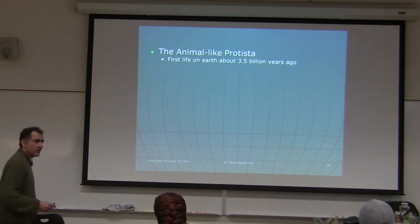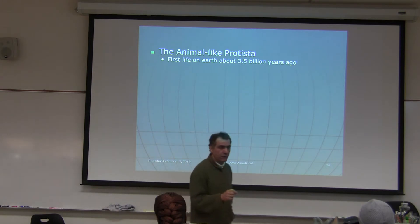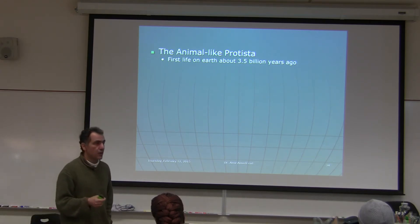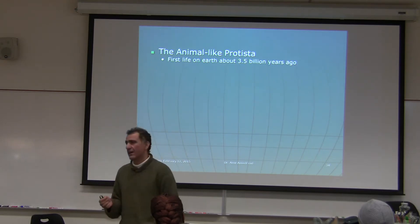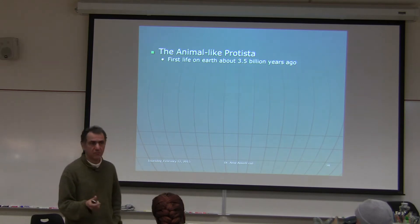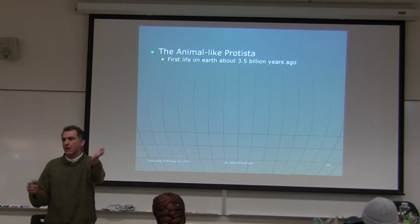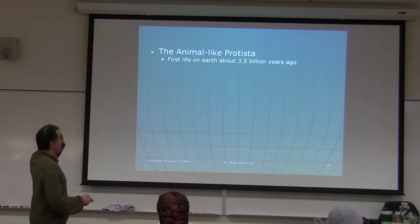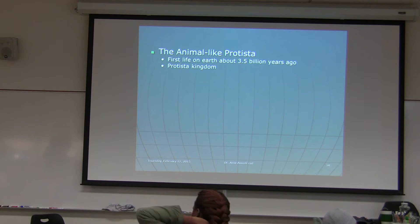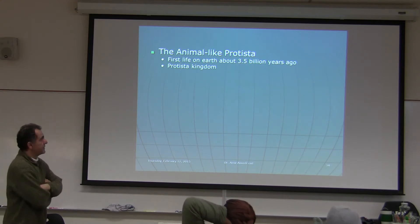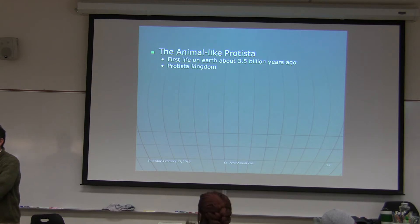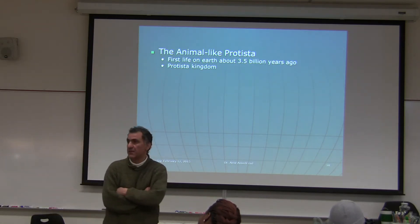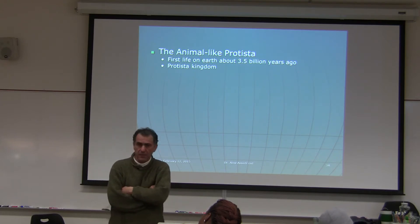Now let's move on to Protista. That was a brief overview of classification for the semester. Life on Earth began about 3.5 billion years ago with prokaryotic cells. As a metaphor: if Mother Earth threw a party, the first organisms to arrive were bacteria. They came to help fix things up. Humans arrived very late — near midnight — and trashed the party, destroying everything. That's what we've been doing as the most recent arrivals on Earth.